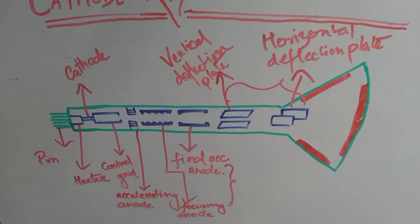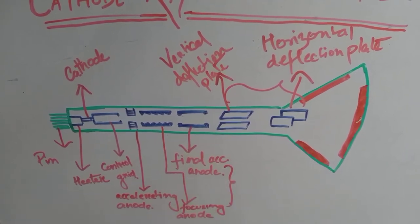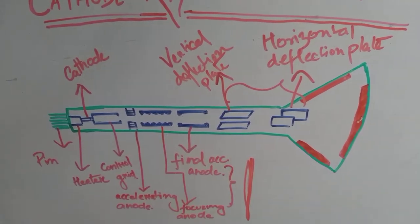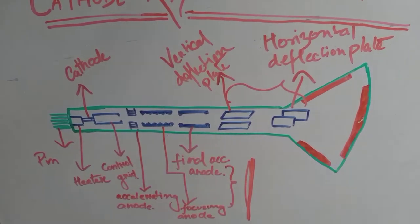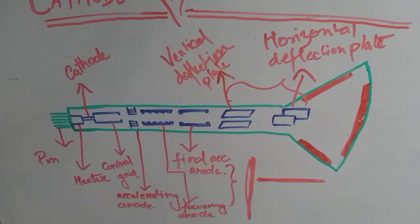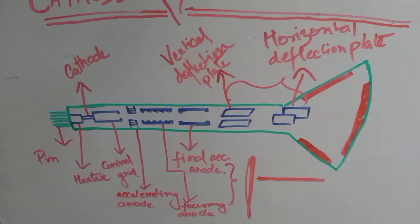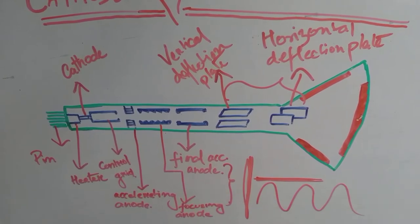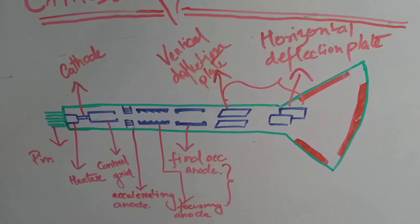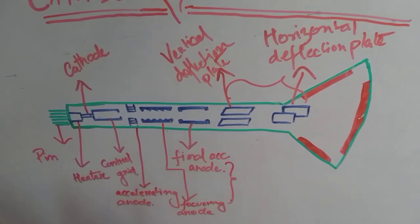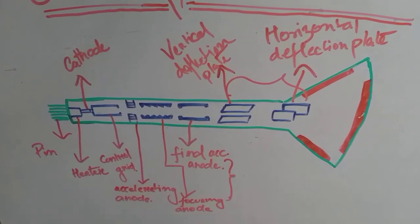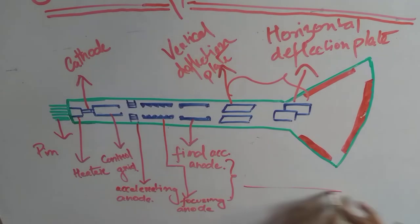When a potential difference is applied to the vertical deflection plate, the electron spot will move vertically up and down. When a potential difference is applied to the horizontal deflection plate, the electron spot will move sideways. When an alternating voltage is applied to any of the plates, the spot will oscillate on the screen according to the frequency of the alternating voltage. If the frequency is too high, due to the persistence of the human eye and the screen, a continuous line will appear.